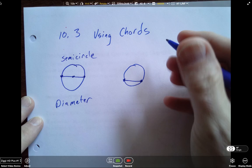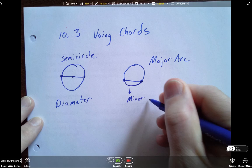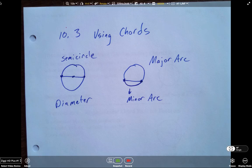If it's not a diameter, then we've got a larger arc and a smaller arc. Remember we call the larger one a major arc and the smaller one is the minor arc. This should be review but I just want to make sure that we're all on the same page.